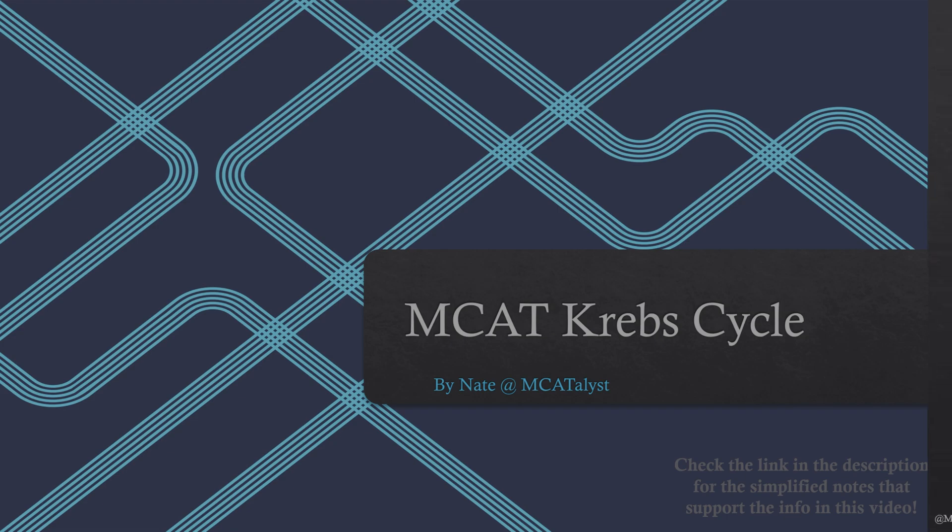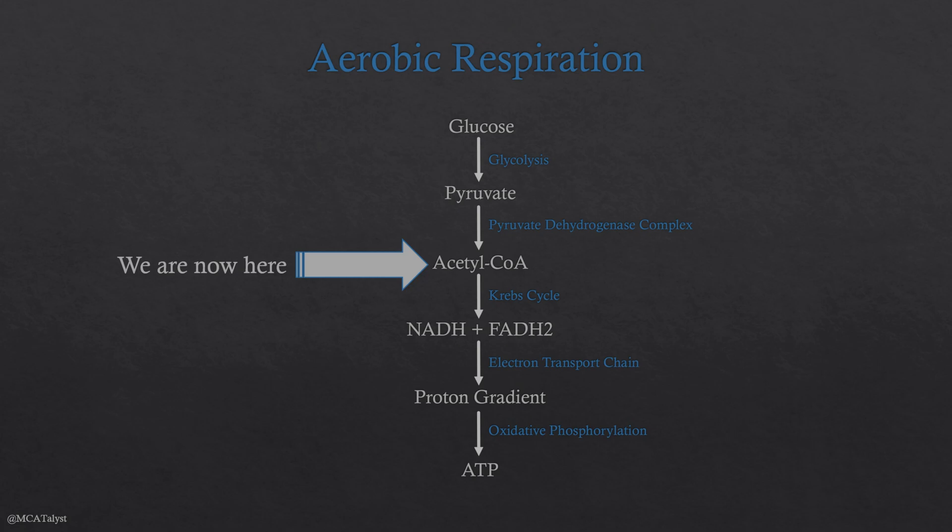Where we just left off with the pyruvate dehydrogenase complex — we are inside the mitochondrial matrix right now and have just produced acetyl-CoA. We're producing two acetyl-CoA for every glucose because glucose is a six-carbon sugar that produces two three-carbon pyruvates. Those two pyruvates both go through the pyruvate dehydrogenase complex, so we end up with two acetyl-CoA, and they are both going to be going through the Krebs cycle.